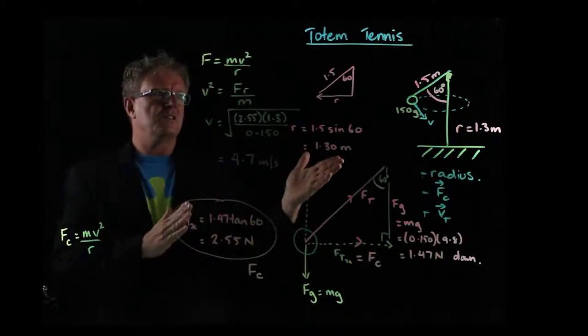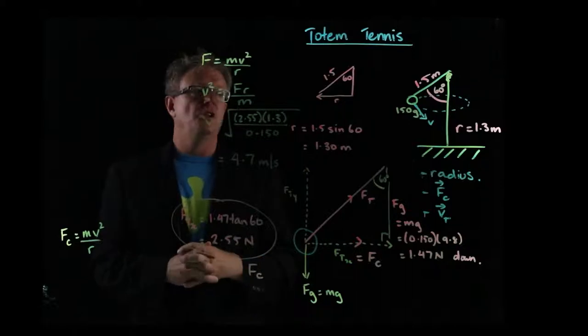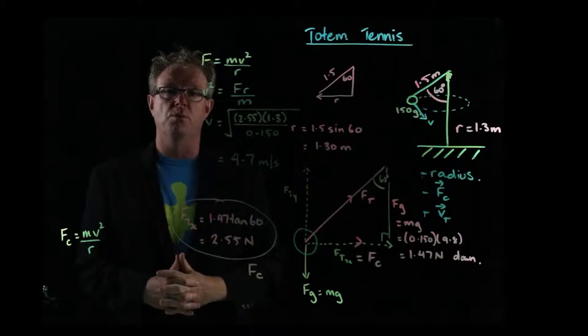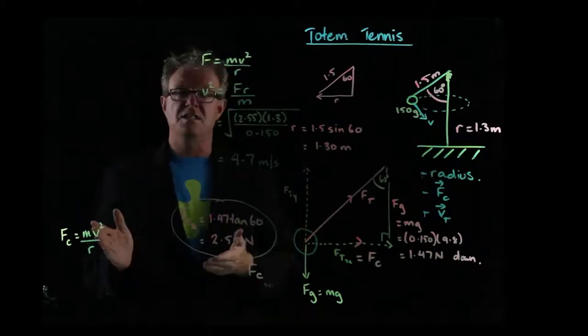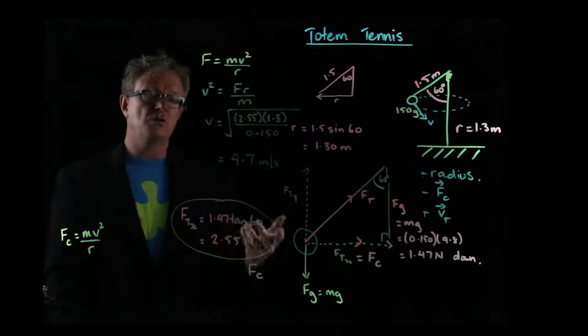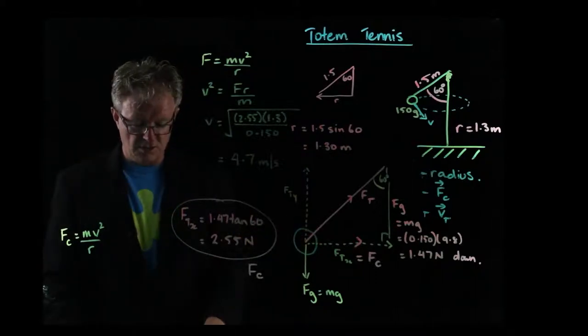So, from this conic pendulum, knowing the angle and the length of the string, we were able to calculate the velocity of the ball. We were able to calculate the centripetal force that causes the ball to change direction. We could find, of course, knowing the velocity, the centripetal acceleration.